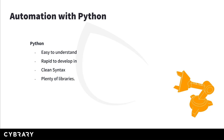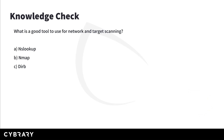Let's do a quick knowledge check. What is a good tool to use for network and target scanning? Is it nslookup, nmap, or dirb? nslookup is a tool for querying DNS information, so that's not it. Dirb is a web directory brute-forcer, so that's not the answer either. Which makes nmap the only correct choice — it's a tool that lets you do very customized scanning over the network as well as on individual targets.